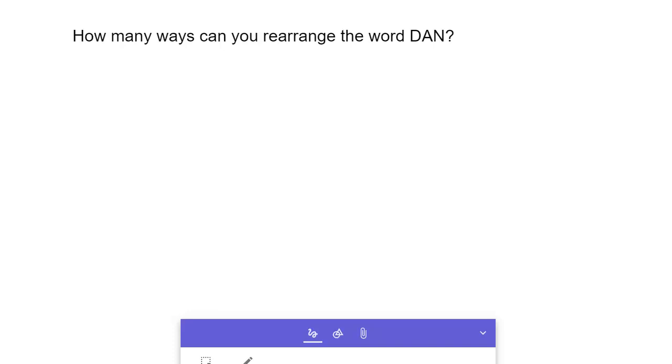The first method is brute force. Mississippi would be tough to do brute force. And what I mean by brute force is we just list them all out. So, you know, Dan, there's one way. You could go DNA. So there's where the D is in the front. Then we could put the A in the front. And so it'd be ADN.